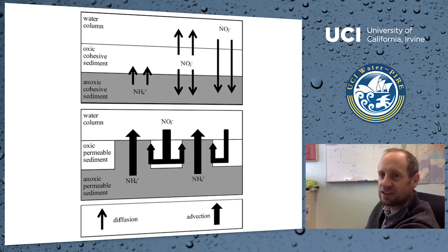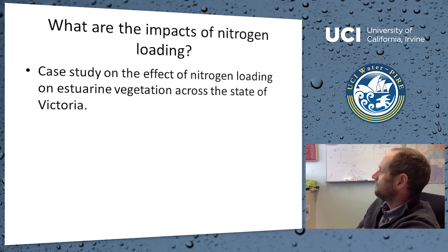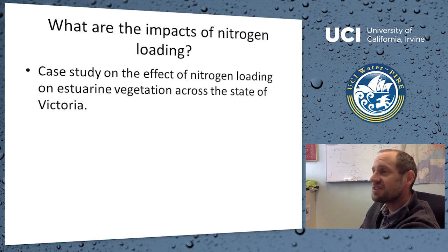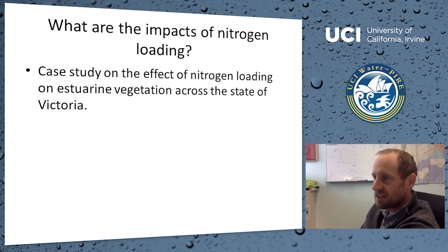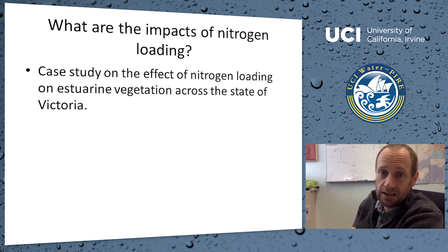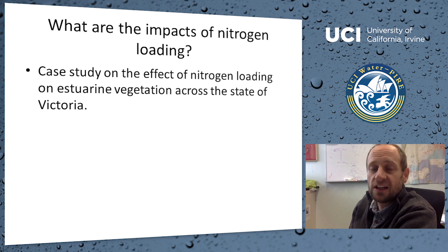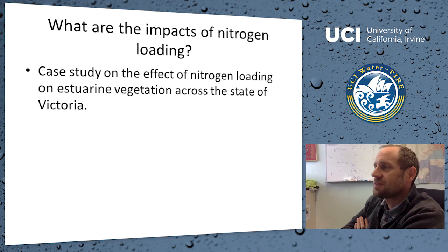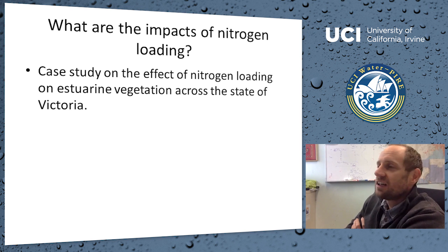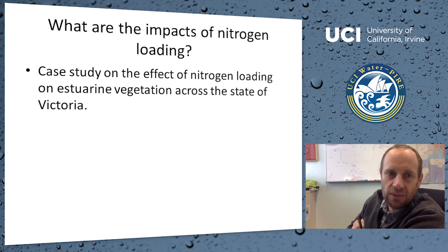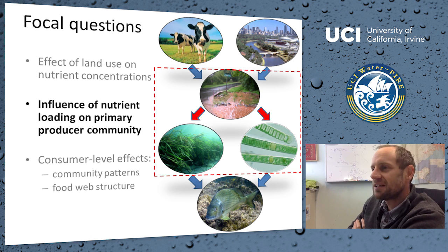Now I'll finish up with some work where we looked at the impacts of nitrogen loading on coastal systems. The case study is the effect of nitrogen loading on estuarine vegetation across the state of Victoria. We selected a range of catchments from pristine — we're fortunate in Victoria to still have catchments with intact vegetation and no development — through to extremely highly urbanized and agriculturally dominated catchments, looking at the influence on the primary producer community.